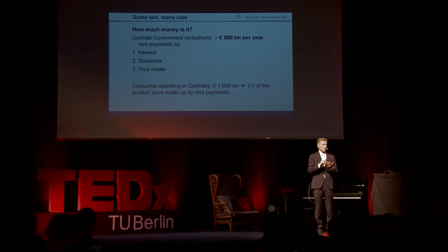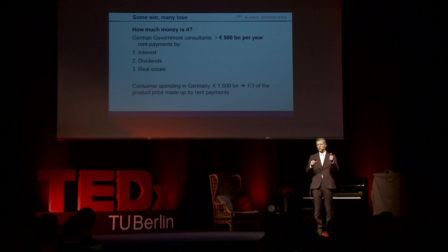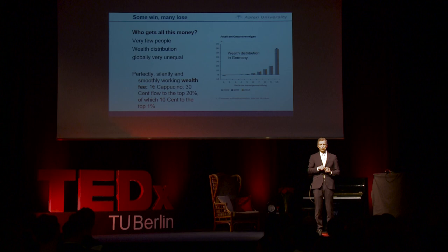At this point, two questions arise: how much money is it, and where does it flow to? Because all these daily transactions happen whether we know it or not, or want it or not. Just some numbers for Germany: German government consultants estimate those rent payments in the form of interest, dividends, and real estate rent payments at more than 500 billion euros per year. Consumer spending in Germany amounts to about 1,600 to 1,700 billion euros, so about one third of the price of each product and service we buy is made up by those capital costs.